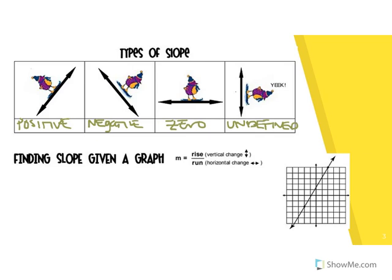That's just a quick review of what kinds of slopes we're looking at. In order to find the slope from a graph, remember your variable m always represents the slope. Rise is your vertical change — the y values — and the run is always the horizontal change — the x-axis. So we're going to start at a nice point, meaning it's actually going through the graph on an actual axis, not through a half point. That's what I mean by a nice point.